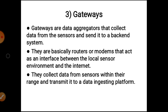Next layer is gateways. Gateways are data aggregators that collect data from the sensors and send it to the backend system. They are basically routers or modems that act as an interface between the local sensor environment and the internet. They collect data from sensors within their range and transmit it to the data ingesting platform. The need for gateways and the sensor-to-gateway network is eliminated if the sensory device itself has a built-in gateway, or in other terms, is capable of transmitting data over a large distance on its own. In such a case, the sensory device only needs to read data and send it to the backend system.